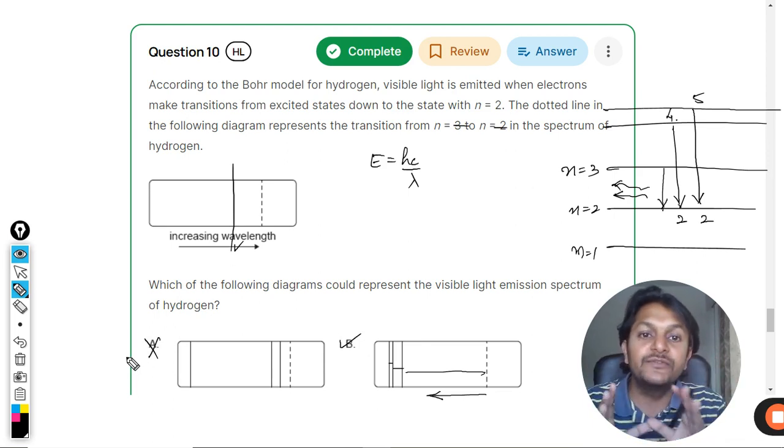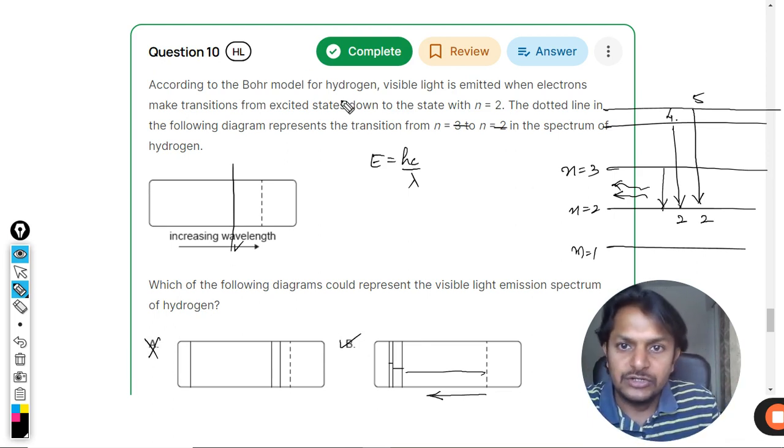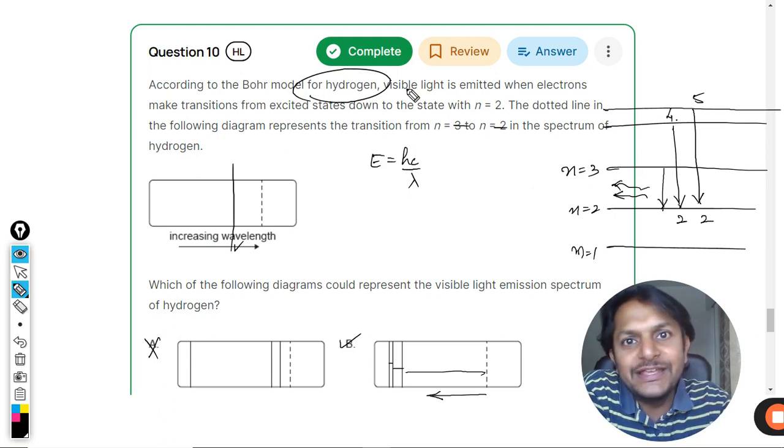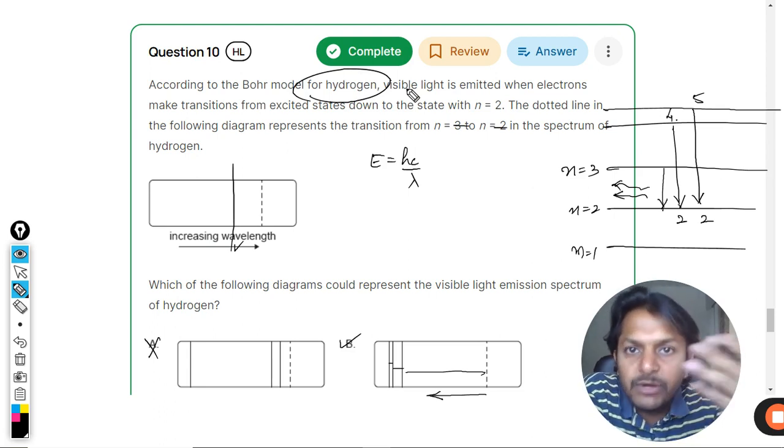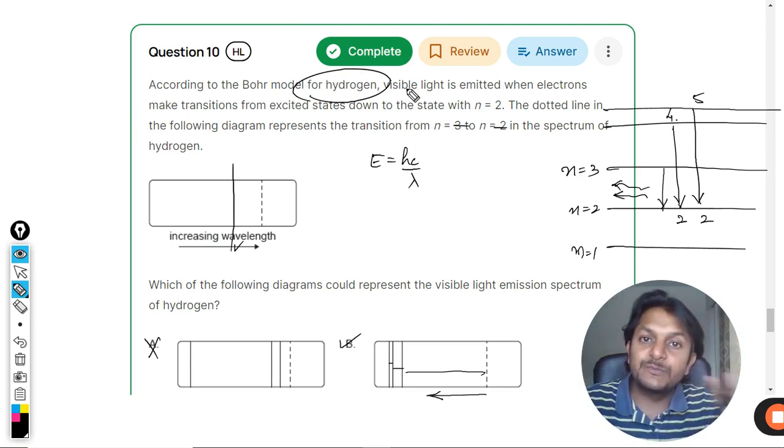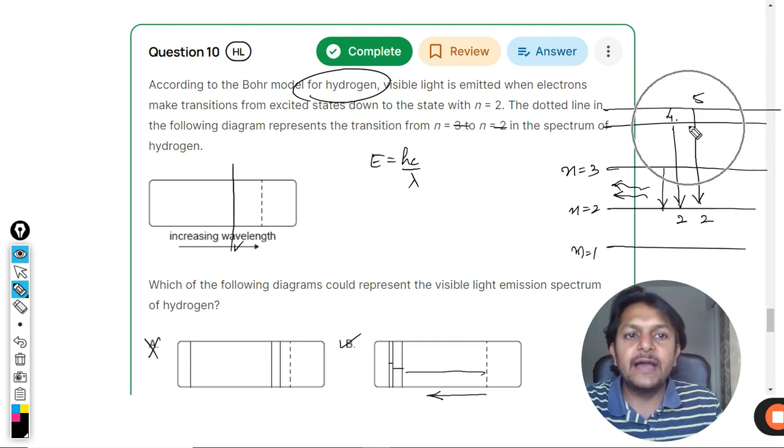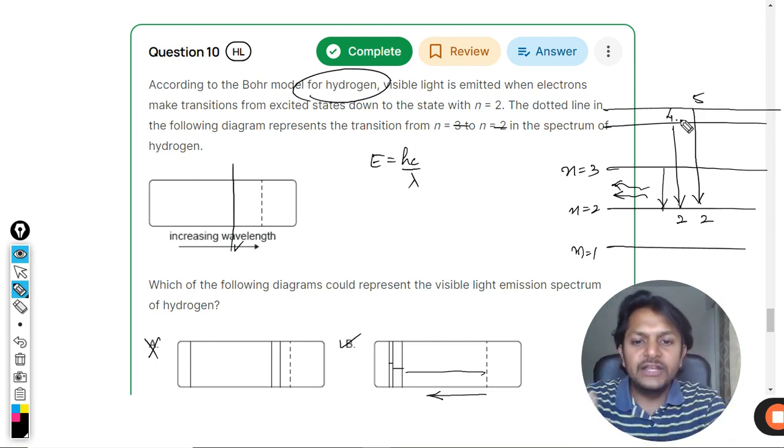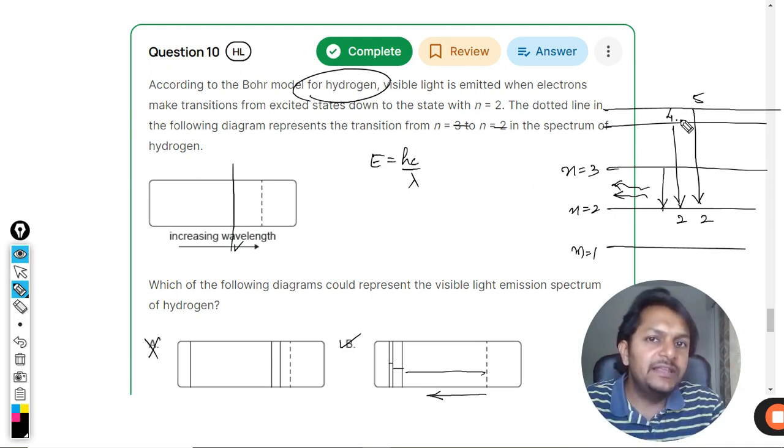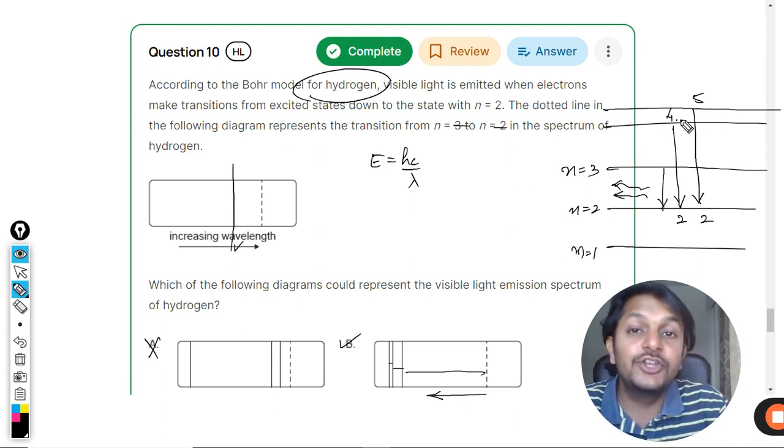Clearly B will be the correct answer. A will not be correct. This argument is correct for hydrogen, not for any other element. If you're talking about helium or some other material, you would have a different kind of spectrum. In the case of hydrogen, the gap keeps on increasing, so we can say B will definitely be correct.